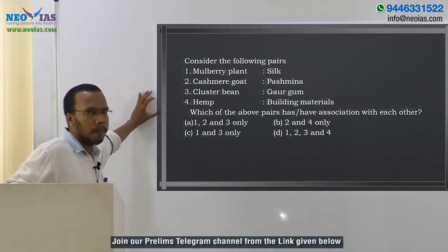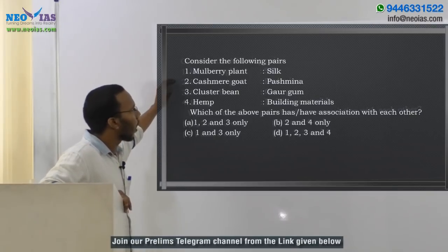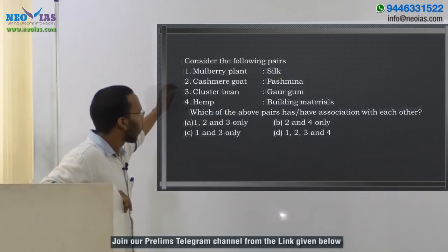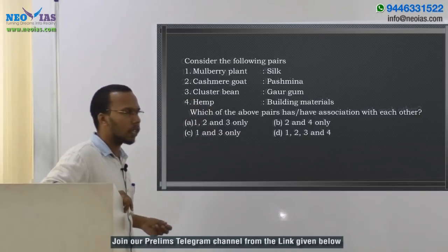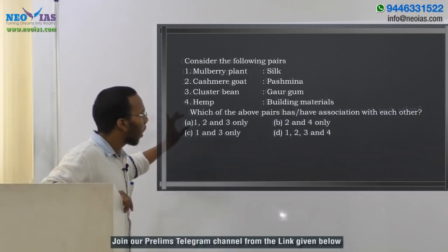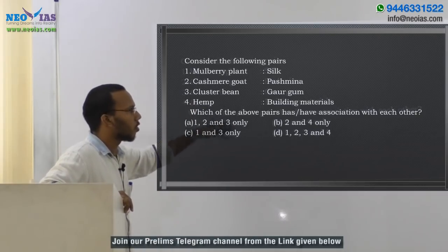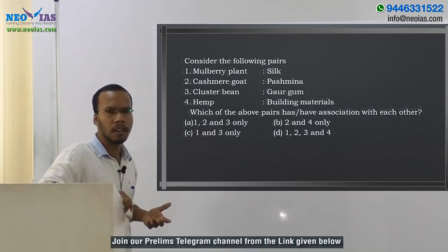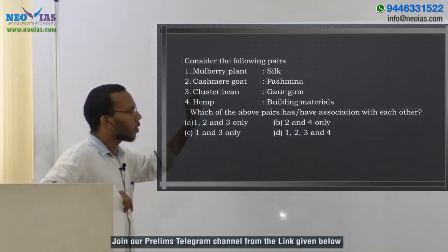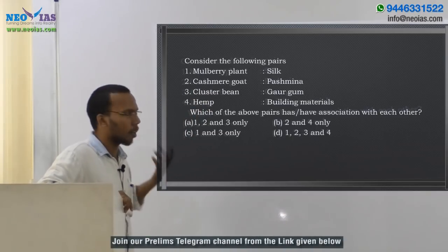This is the pair question. They have given mulberry plant paired with silk, Kashmiri goat paired with Pashmina, cluster bean paired with guar gum, and hemp paired with building materials. They are asking which of the above pairs have an association with each other — which of the given pairs are correct.